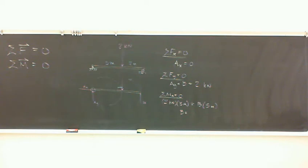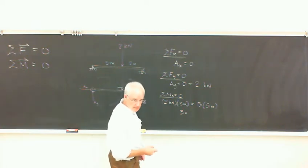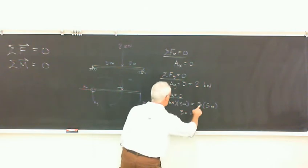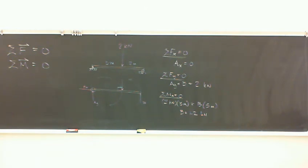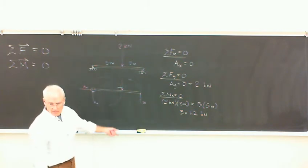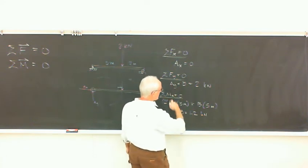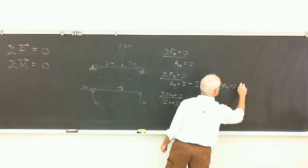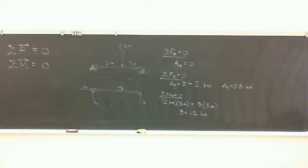B is unknown, and its moment arm is 5 meters — the full five meters from point A. Working that out: B equals 1.2 kilonewtons. If you're actually designing this, you'd make it substantially more than that because you want a factor of safety. Going back to the y-direction equation, AY equals 0.8 kilonewtons. That's the simplest of all problems — finding the reactions — and that's how we do it.